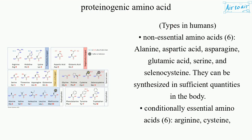Types in humans: non-essential amino acids — 6 total: alanine, aspartic acid, asparagine, glutamic acid, serine, and selenocysteine. They can be synthesized in sufficient quantities in the body.